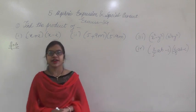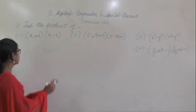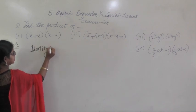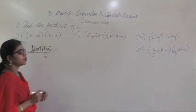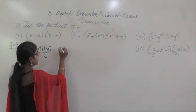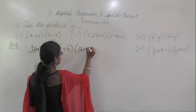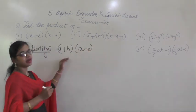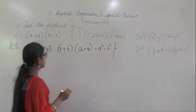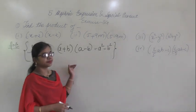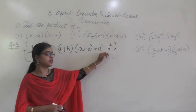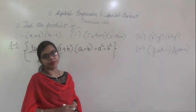Good morning everyone. Today we will start exercise 5G. Before starting, let's look at one identity we are going to use — this is the 3rd identity we've studied. It states that A plus B multiplied by A minus B equals A squared minus B squared. If the expression is in this form, you can convert it into A squared minus B squared, and vice versa.